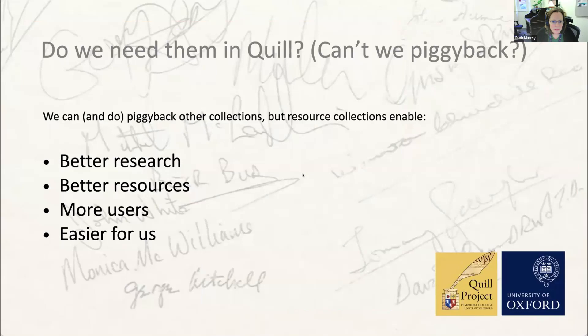So it enables better research. Secondly, it also enables better resources. Good resource collections mean we have more data about primary sources in the database and therefore more options for exploiting them and creating tools for researchers. We can create commentary collections, transcriptions are searchable, you can order material by dates and authors, and you can attach resource items to multiple negotiations. We're also talking to AI experts about other ways we can exploit these collections in the future.